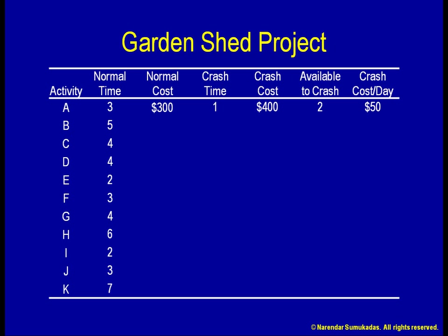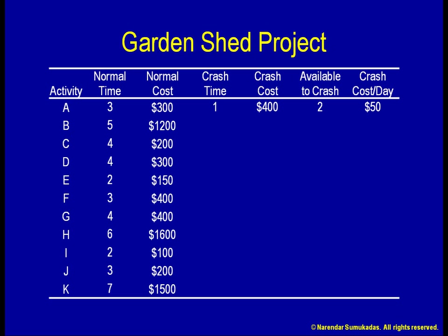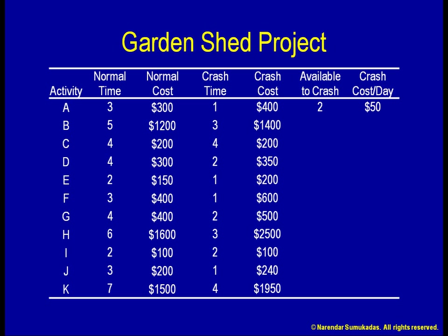Crashing incrementally in this manner is often feasible for a vast many project activities. So when we look at the $100 for crashing activity A, we can assume that we have the option of spending $50 and crashing activity A down to 2 days, or spending $100 and crashing it down to 1 day. I proceed to list the normal costs, the crash times, and crash costs for all the activities, then calculate the days available to crash and the crash cost per day.